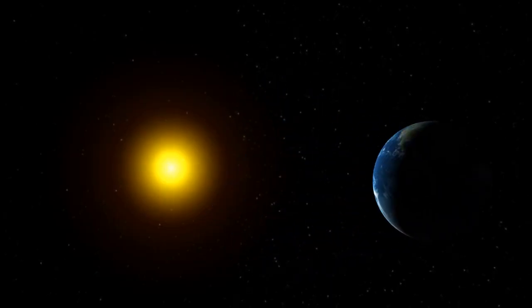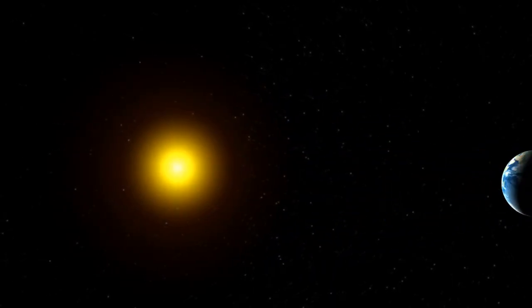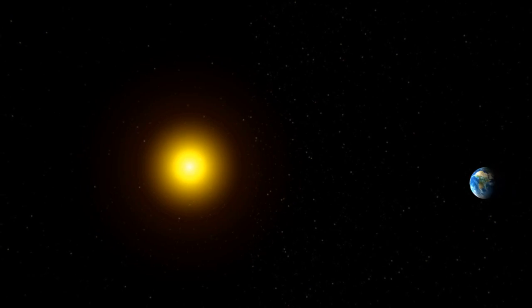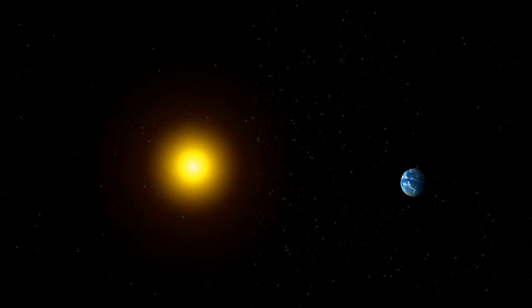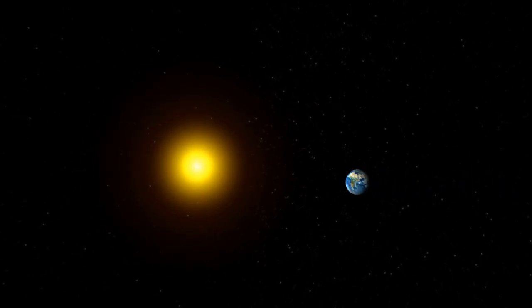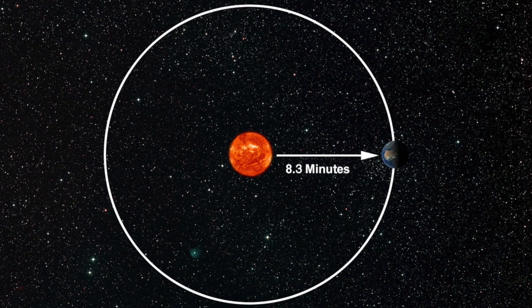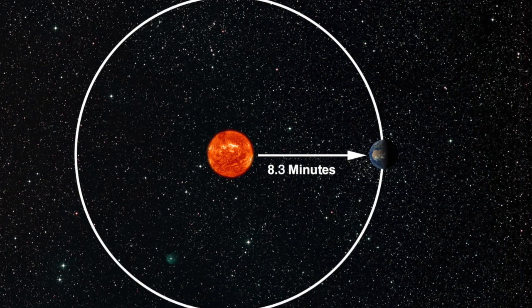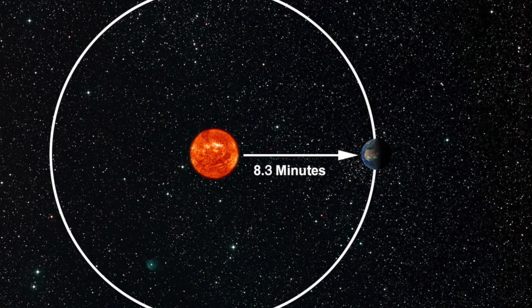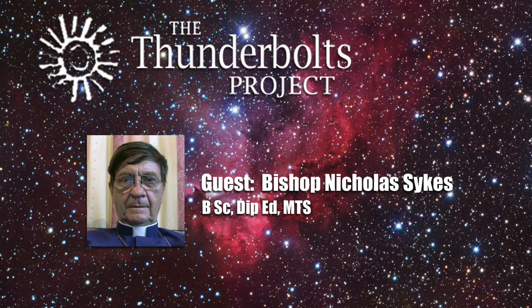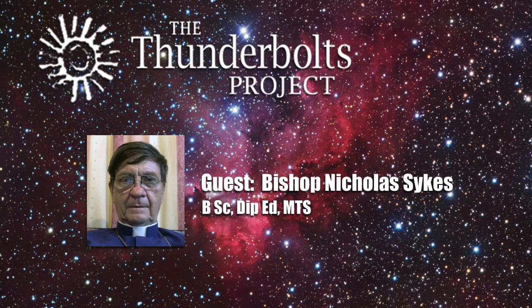However, such a deduction must inevitably bear with it the conclusion that the Earth is actually being attracted to some point in space that was the location of the Sun's center of gravity 8.3 minutes of time in the past, rather than where that center of gravity actually is when the Earth experiences the attraction. But that conclusion bears with it a number of fatal contradictions.